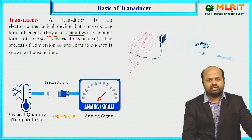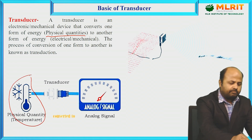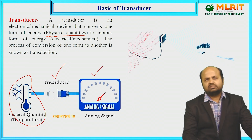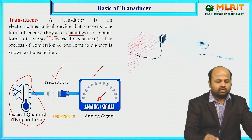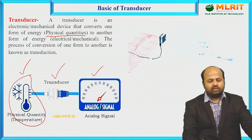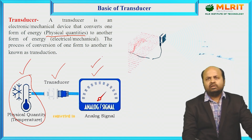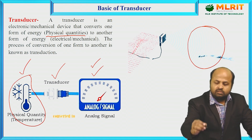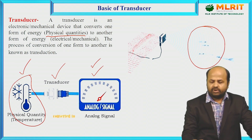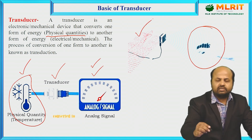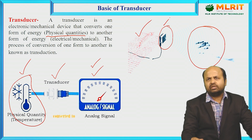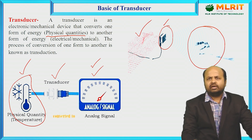Here we can see in the block diagram, one physical quantity — temperature — is converted with the help of a transducer into some electrical signal. This is the basic example of a transducer. It will convert a physical quantity into some electrical or mechanical energy. Another diagram shows a hand movement or clapping sound being converted into an electrical signal.